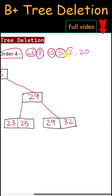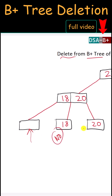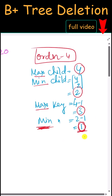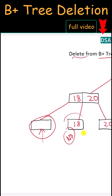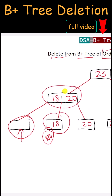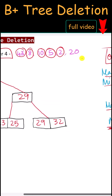Next we delete 2. After deletion, this node is empty. We cannot borrow from the right child because it has the minimum number of keys, so we have to merge them together. This is the result after merging.